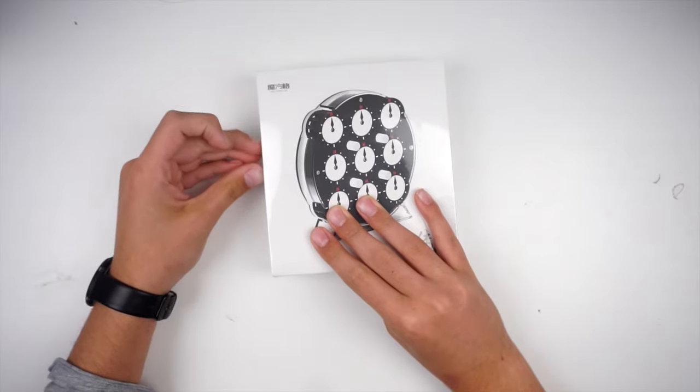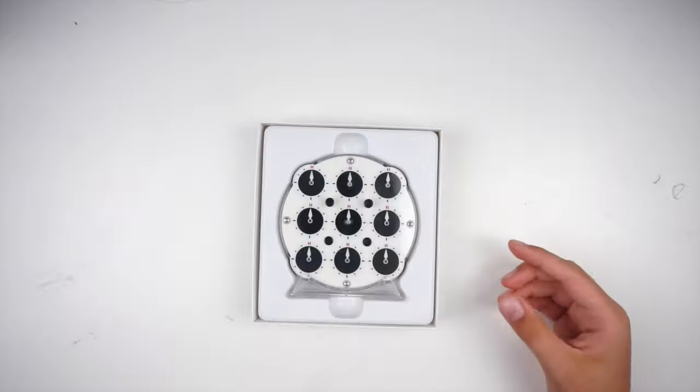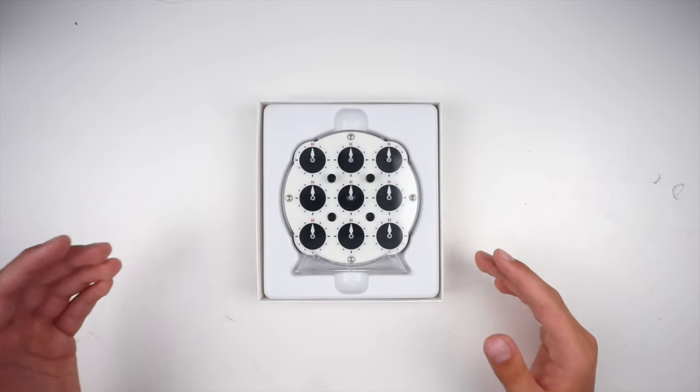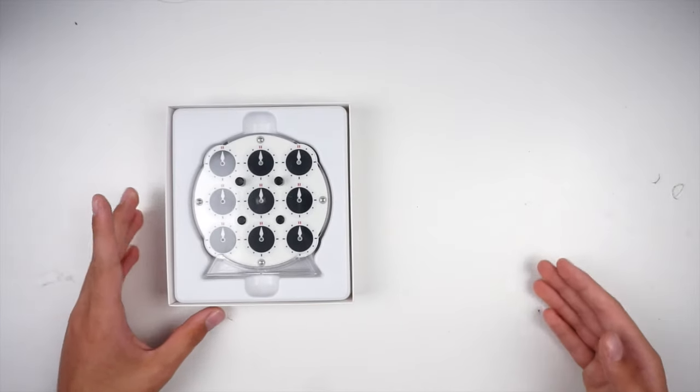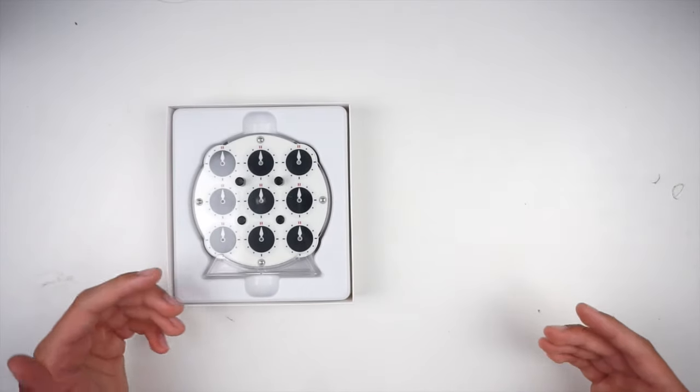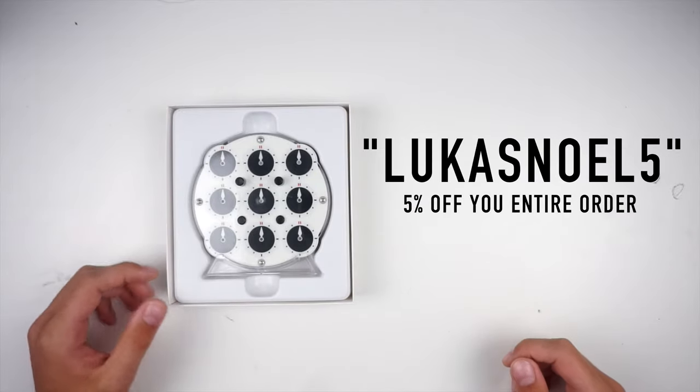As you may know, this is the brand new QiYi Clock by QiYi. This clock has been teased for like four years, so we're finally getting it. It's now available at Cubezz.com for $29.99, and you can also use the discount code 'lucaswillfire' for 5% off your entire order.